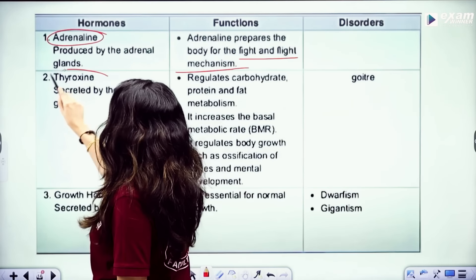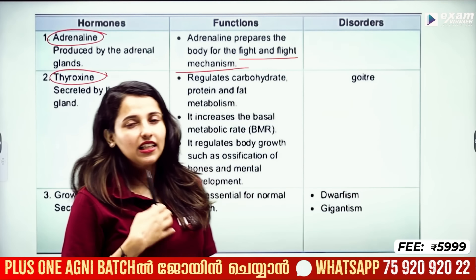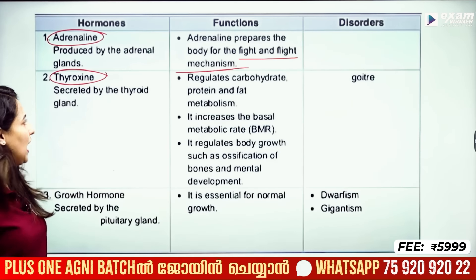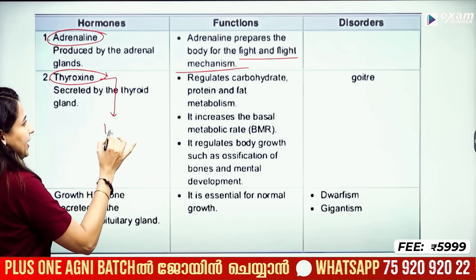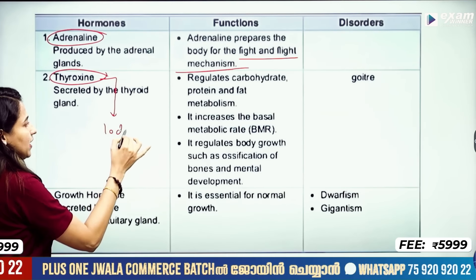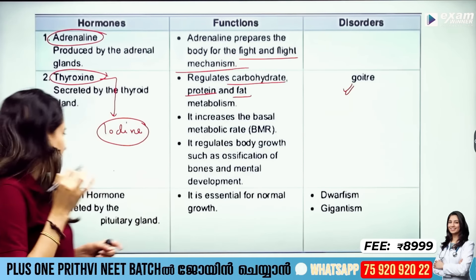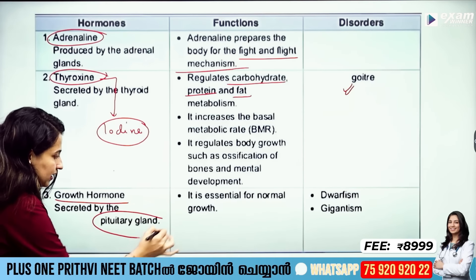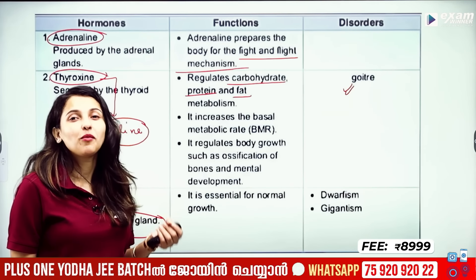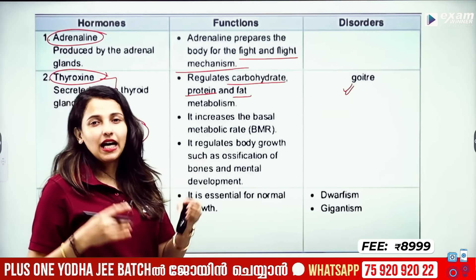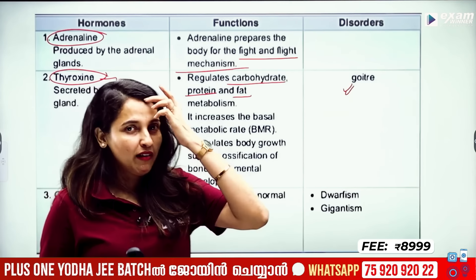Then comes the thyroid gland, which secretes thyroxin. Thyroxin regulates carbohydrate and protein metabolism in the body. Then comes the growth hormone, called somatotropin, secreted by the pituitary gland. The growth hormone controls body growth. Deficiency of growth hormone leads to dwarfism.